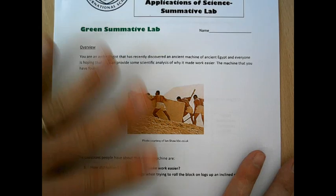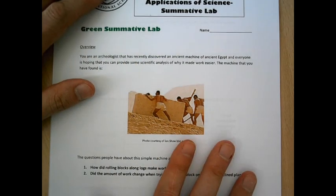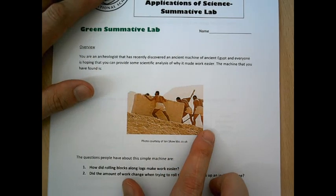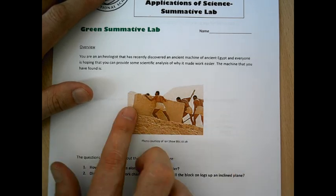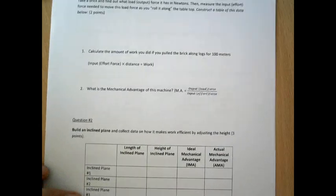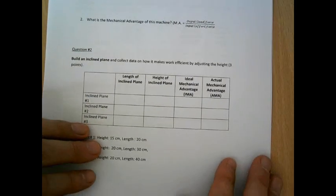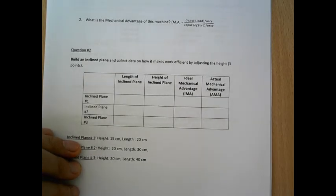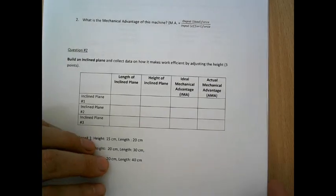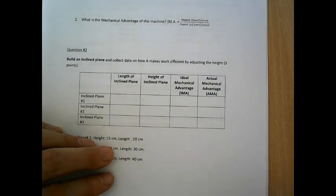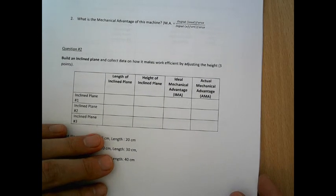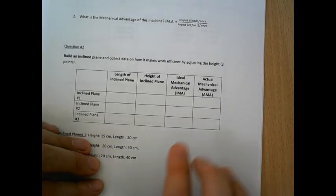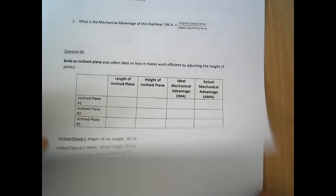Our standard-level lab that most students are using is trying to understand how the Egyptians moved large blocks up inclined planes to the top of the pyramids. For this, they'll use a little bit of math — we have all the formulas given. They'll construct some inclined planes and collect data. We've done this before in class and through quizzes, so they've had a lot of formative assessments leading up to what will show good mastery of these skills, including being able to differentiate between ideal and actual mechanical advantage.